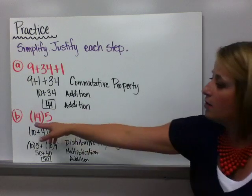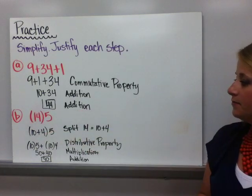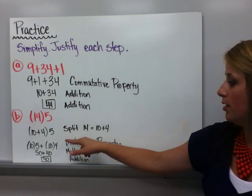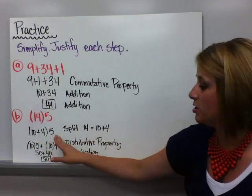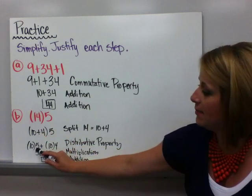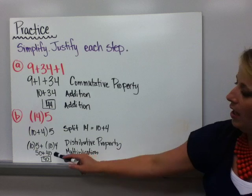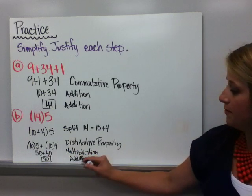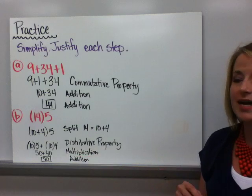Looking at practice B, 14 times 5. Well, what did I do? I split that 14 up to 10 and 4. Then I distributed the 5 to each term inside the parentheses. 10 times 5 and then 10 plus 4. Then I multiplied those. 10 times 5 is 50. 10 times 4 is 40. And in addition, I added, I got 90.